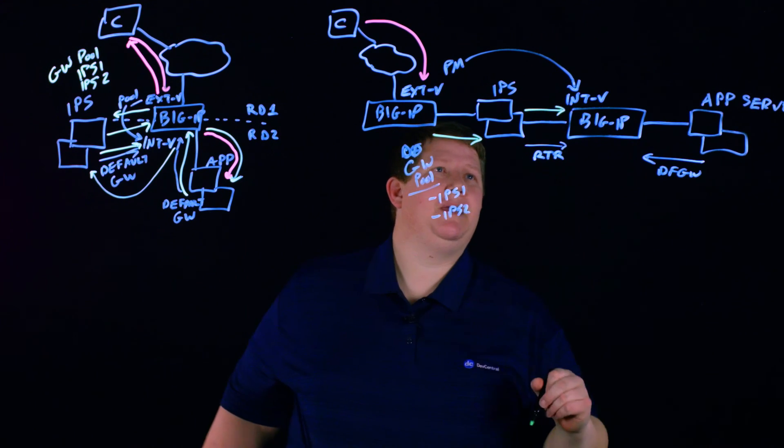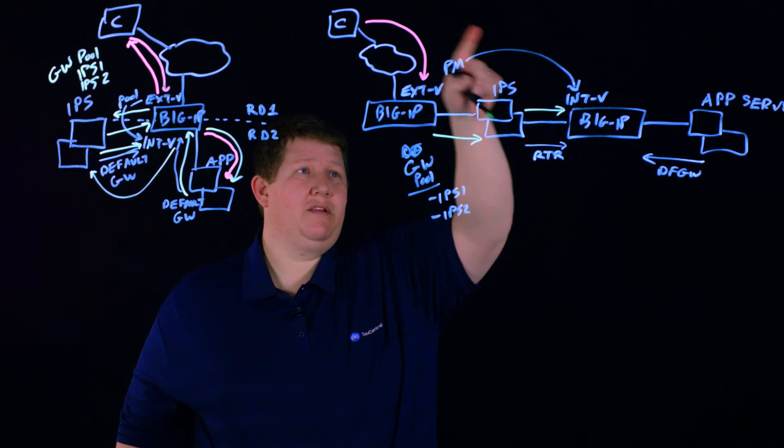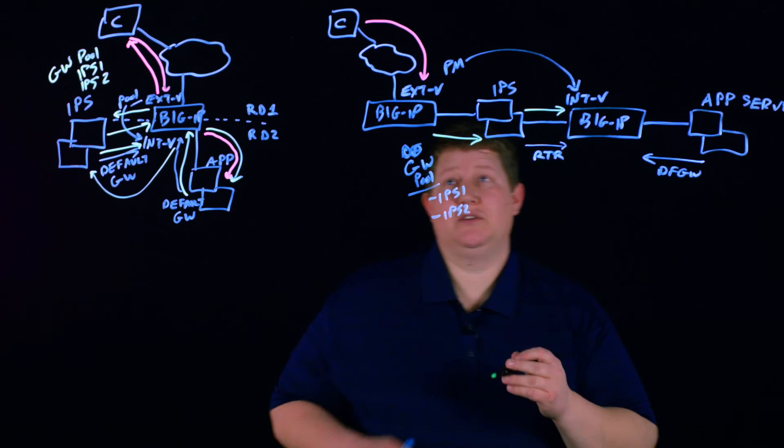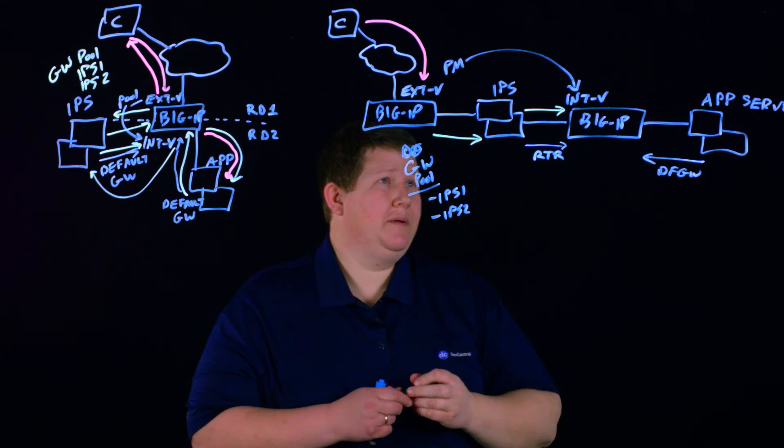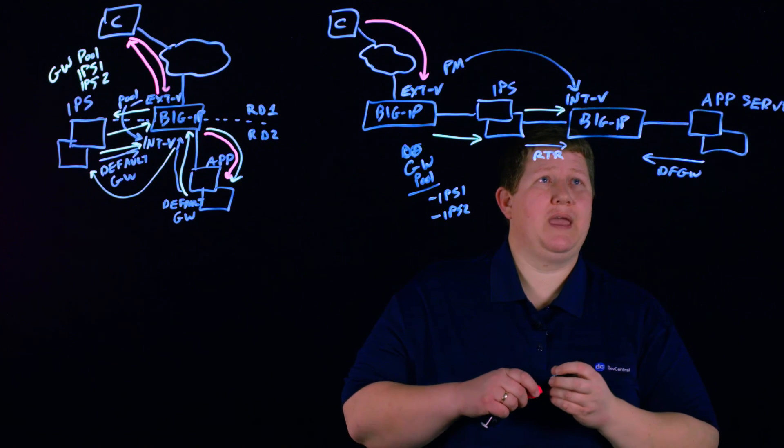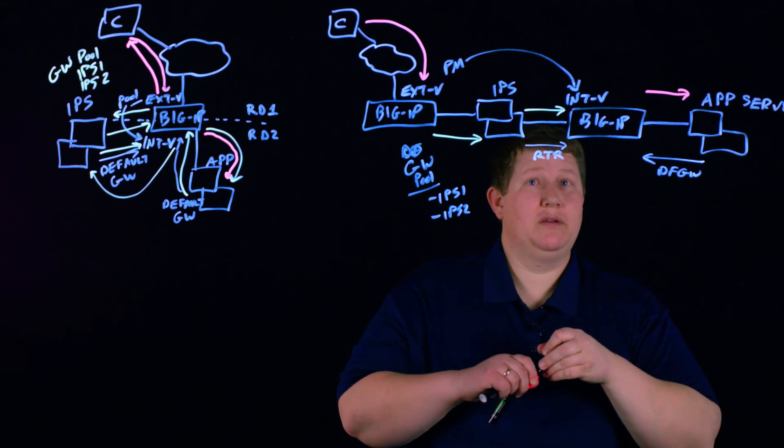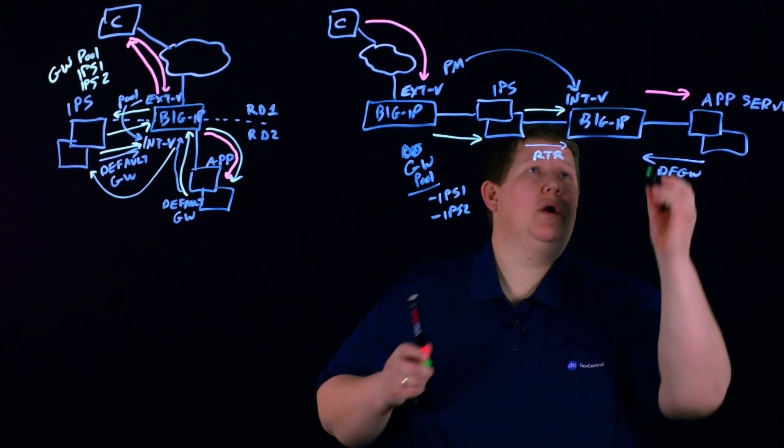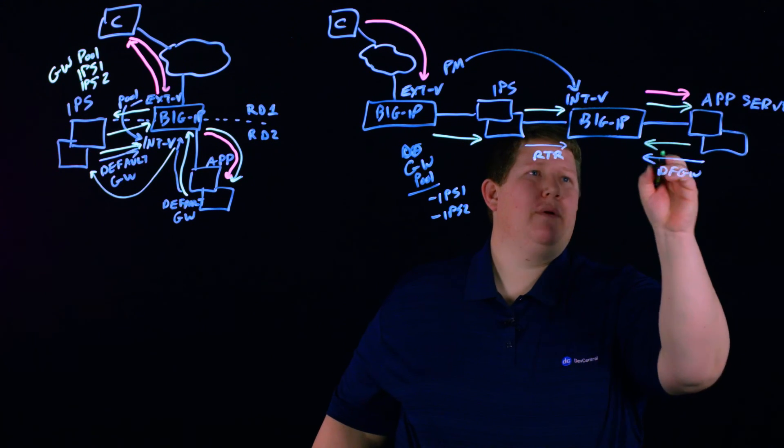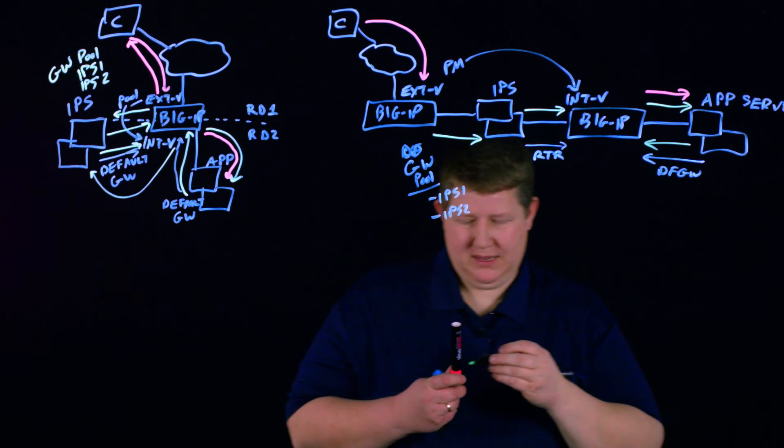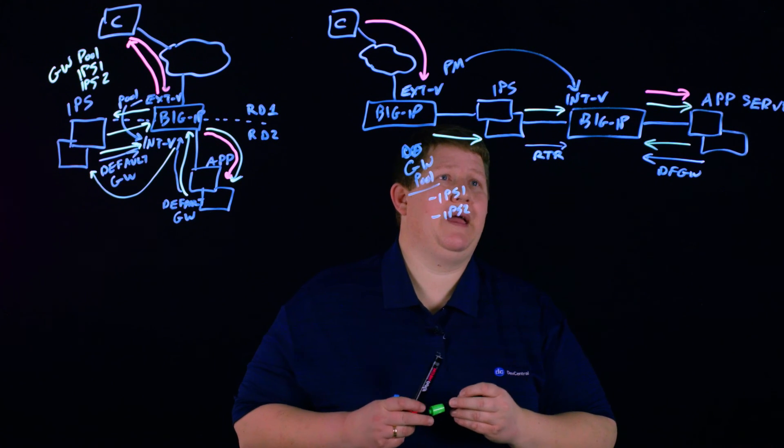We're going to send that in the clear. It's going to route those packets over to this BIG-IP, maintaining the client source address throughout, so source address translation is disabled both here and here. Then BIG-IP can again re-encrypt to the app server or keep it in the clear.